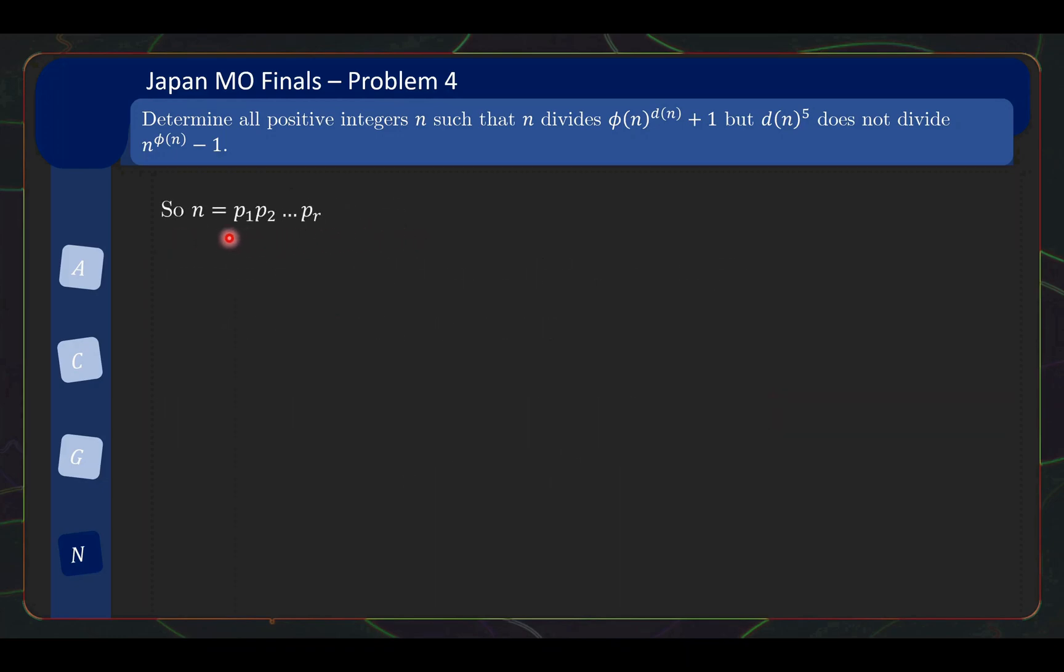It tells us that n is just the product of distinct primes, and φ(n) is basically then just the product of pᵢ - 1, and d(n) is even simpler, it's just 2 times 2 times 2 r times, so it's 2^r. So very good, give yourself a pat on the back.